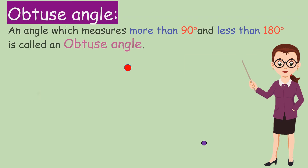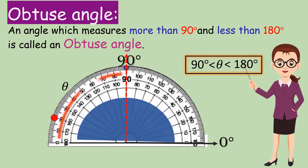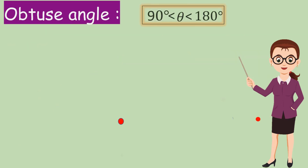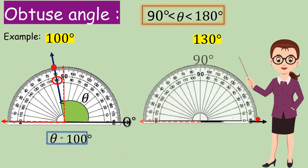Obtuse Angle: An angle which measures more than 90 degrees and less than 180 degrees is called an Obtuse Angle. Examples: 100 degrees, 130 degrees.